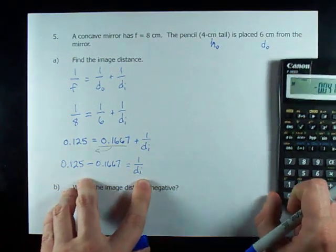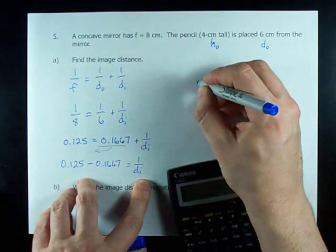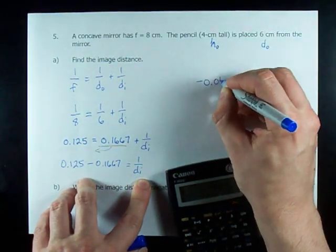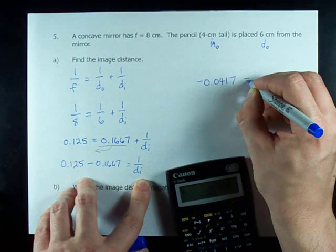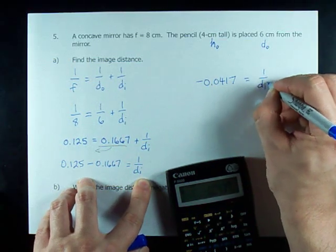Now, we're going to get a space here. So that's going to be negative 0.0417 is 1 over D_I.